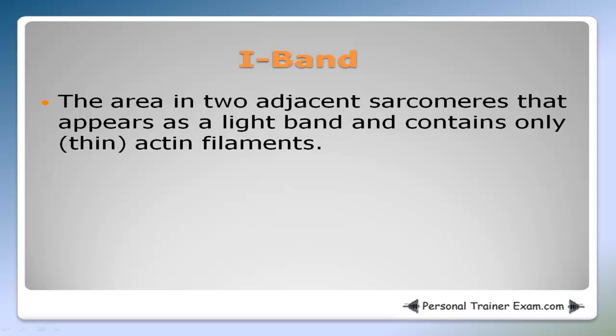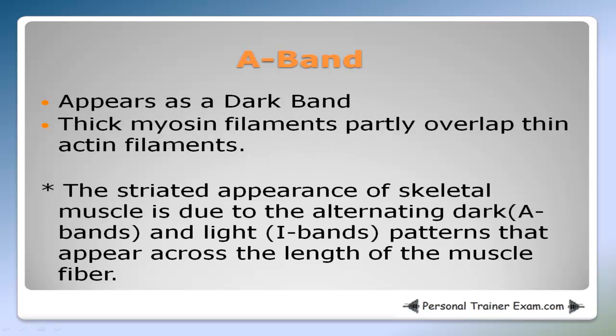The I band is the area in two adjacent sarcomeres that appears as a light band and contains only thin actin filaments. The A band appears as a dark band because thick myosin filaments partly overlap the thin actin filaments. The reason skeletal muscle is striated is because of the alternating dark and light patterns that appear across the length of the muscle fiber.